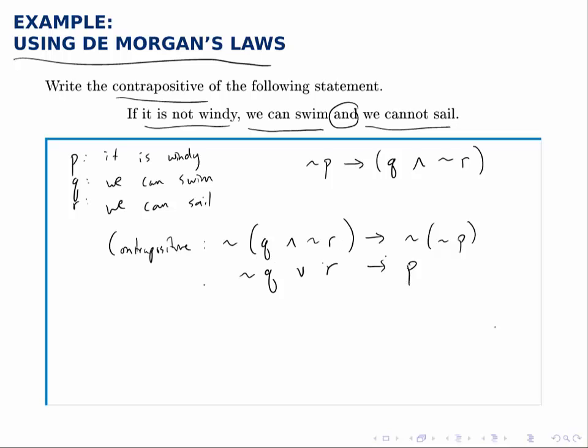So not q or r implies p. If not q or r, not q is we cannot swim, or r we can sail, then it is windy.